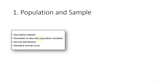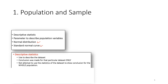In the last lecture we discussed descriptive statistics and the parameters used to describe the population variable. You also learned about the normal distribution and the standard normal curve. Descriptive statistic is a statistic that we calculate to describe the data set — the conclusion is made for that particular data set only, with no attempt to use the statistic to infer the population.